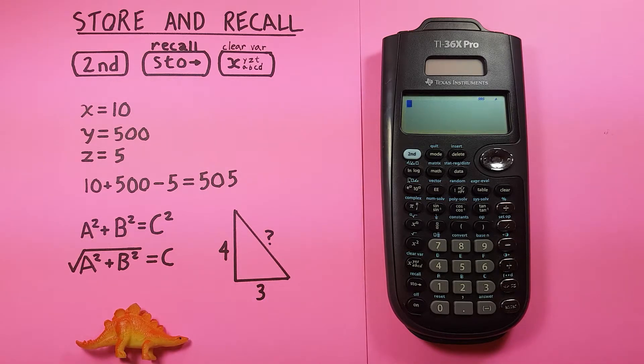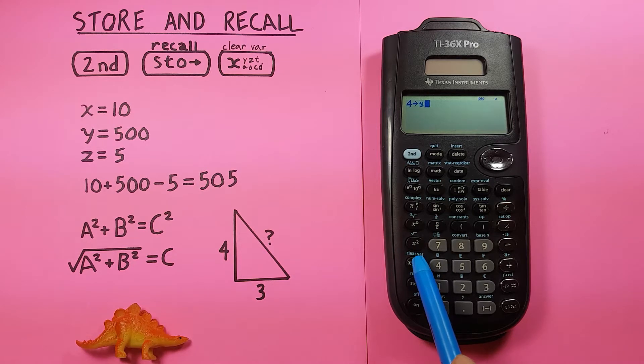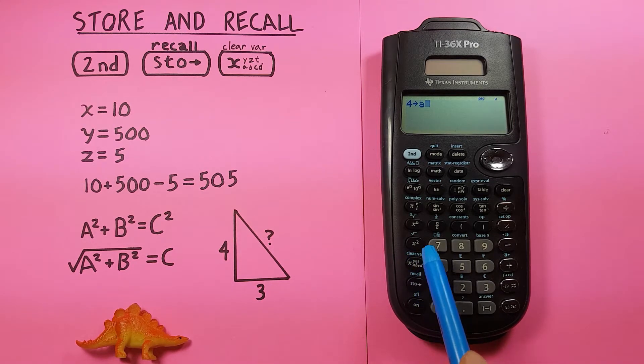We can enter it onto our calculator. So, first we'll put 4 into a, so we go 4, store, cycle through to a, there we go, 4 into a, enter.